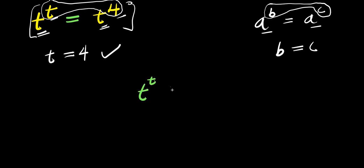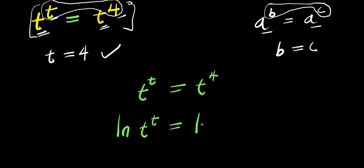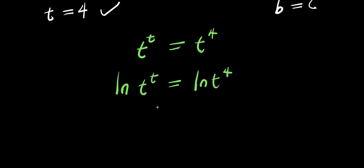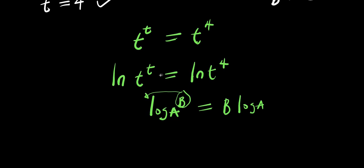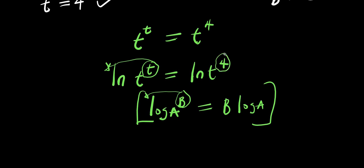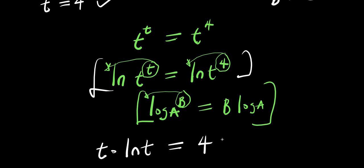So you have your t power t, and this equals t to the power of 4. So you make use of natural log — you have natural log of t power t, and this equals the natural log of t to the power of 4. Now remember, if you apply this property of log: if you have logarithm of a to the power of p, this equals p times log a, meaning the exponent comes in front of the log. This property is also applied to natural log, so the t at the exponent will come in front of this natural log, and the 4 will come in front of this natural log. So this equation becomes t times natural log of t equals 4 times natural log of t.